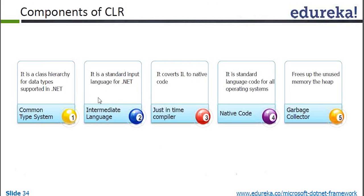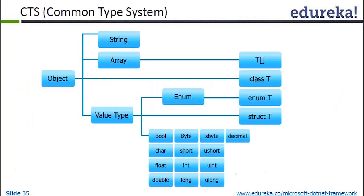The components of CLR include: CTS, which contains all the data types and is one of the best components of CLR; IL, where your programming language code is converted into Intermediate Language; JIT, which converts IL into native code; and finally, the Garbage Collector, which takes responsibility for freeing up memory.